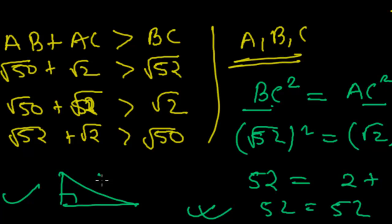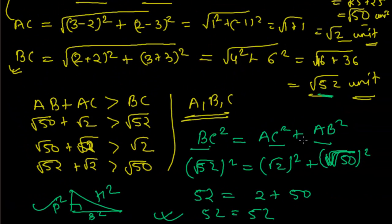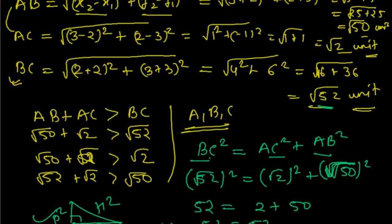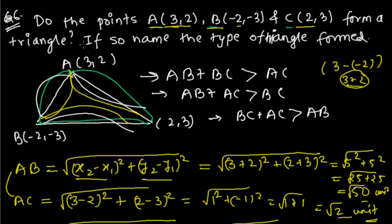So we can say these points A, B, and C are the vertices of a right angle triangle. And like this, we have to show this. We will be meeting in the next video with another problem related to rectangles.